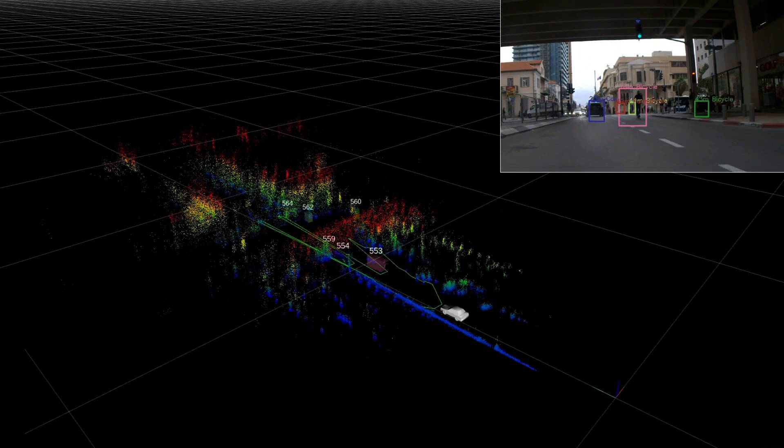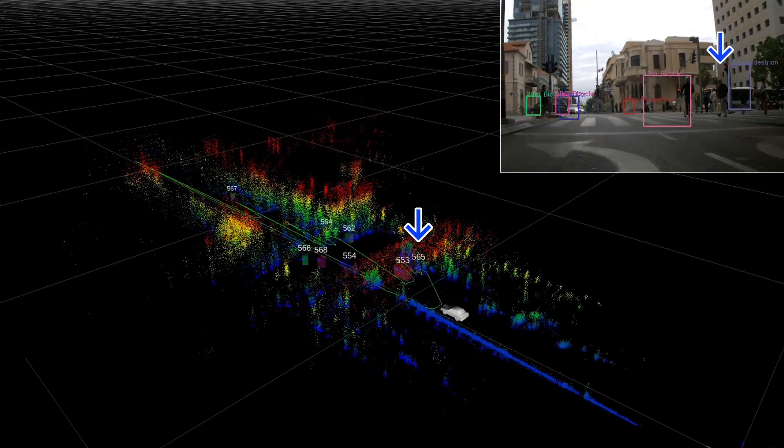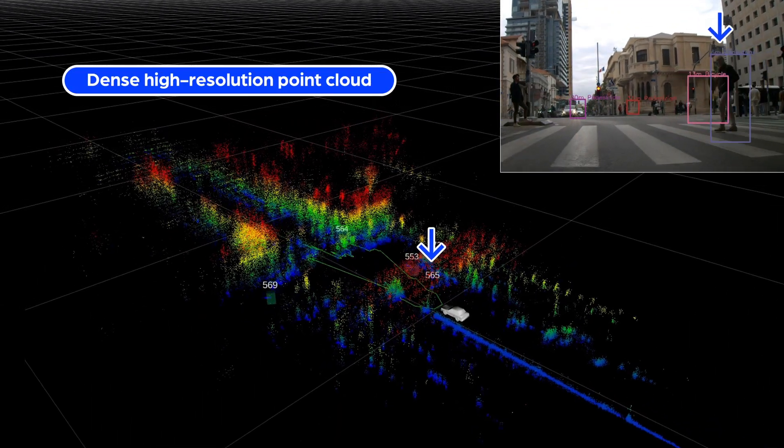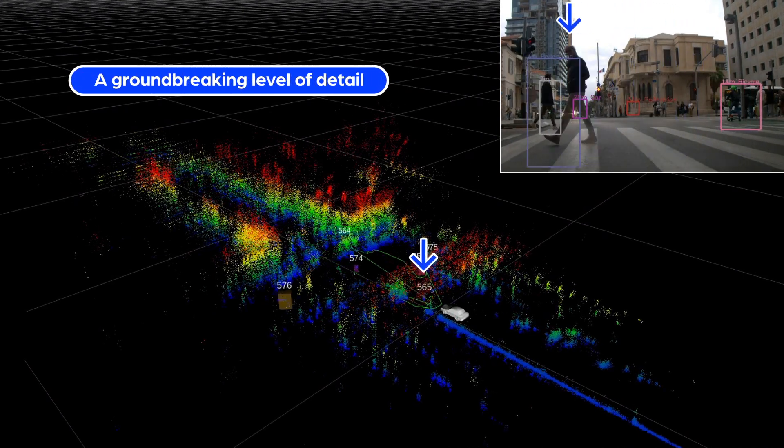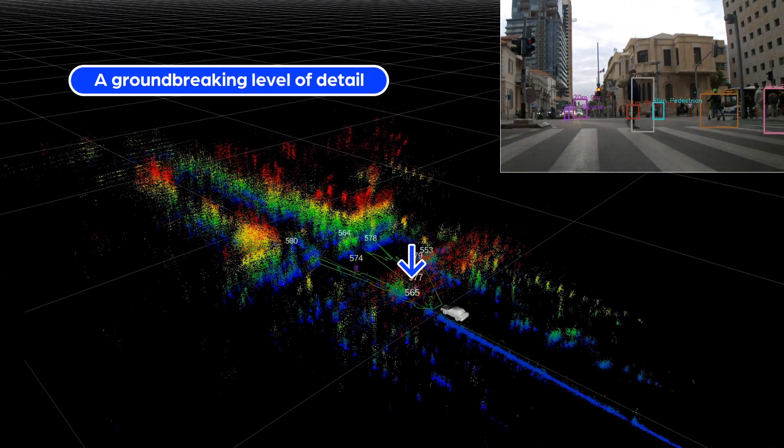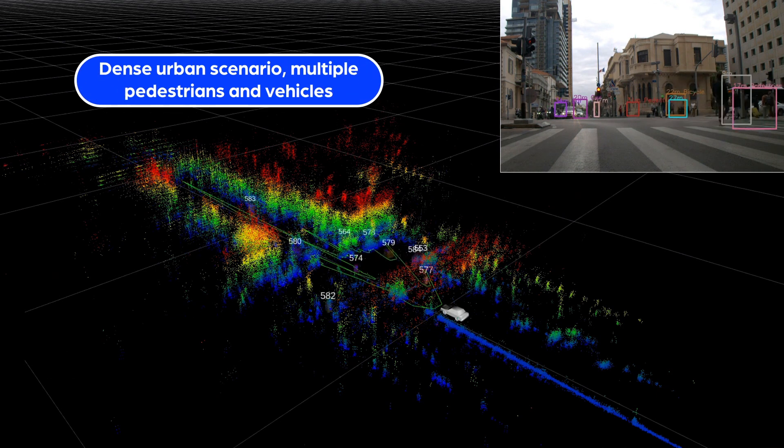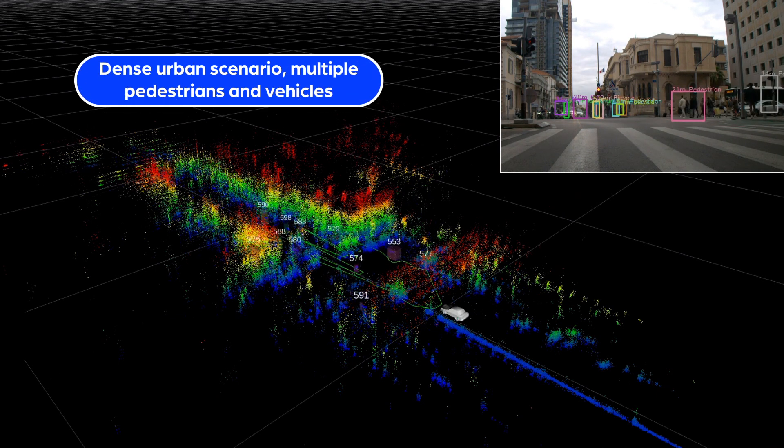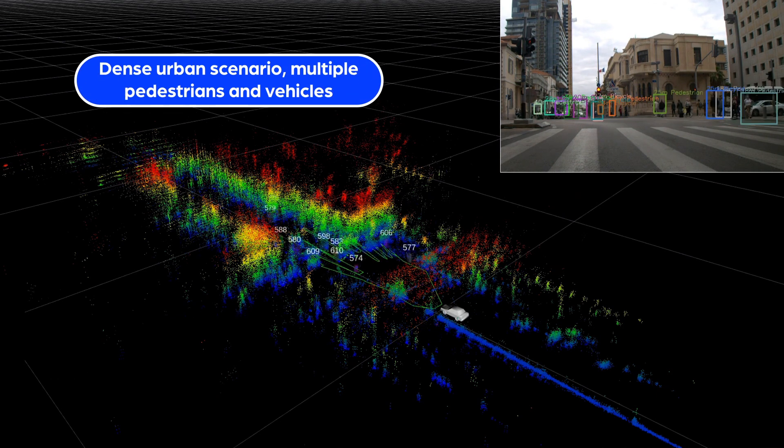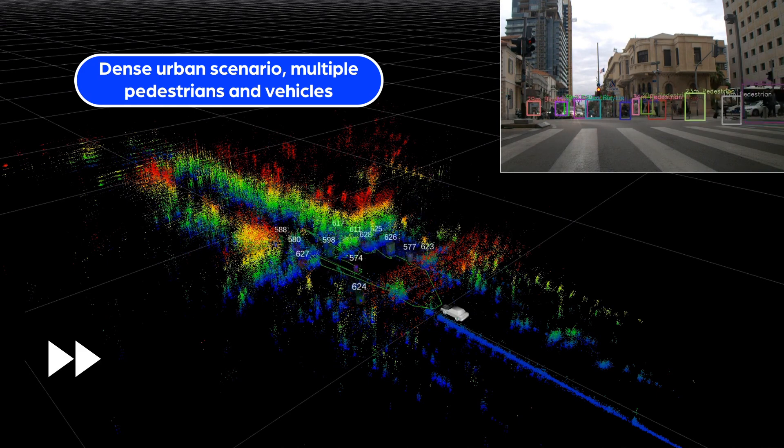By applying AI and advanced processing techniques to an unprecedentedly dense, high-resolution point cloud, Phoenix achieves a groundbreaking level of detail. Its 48 transmit and 48 receive antenna array overcomes the limitations of smaller MIMO configurations while minimizing false alarms.